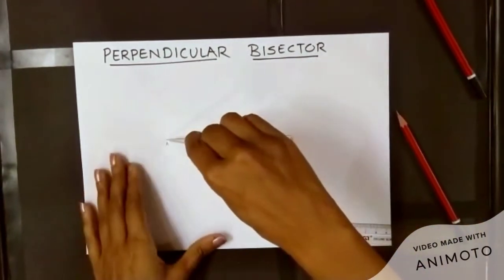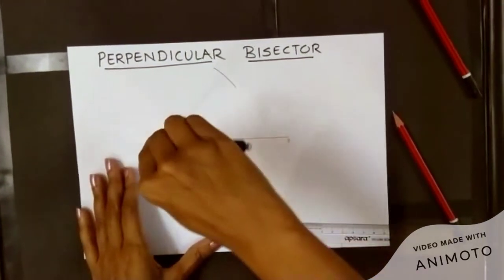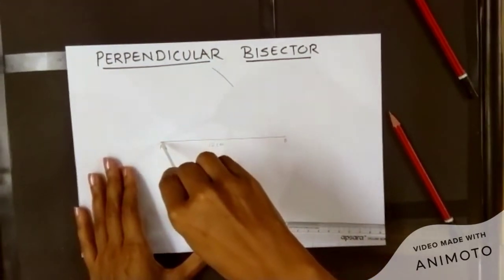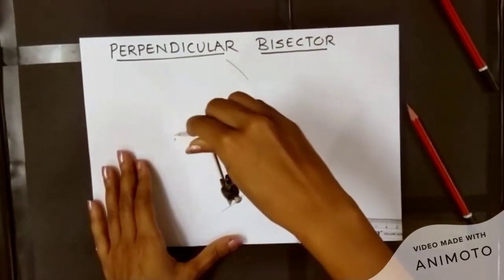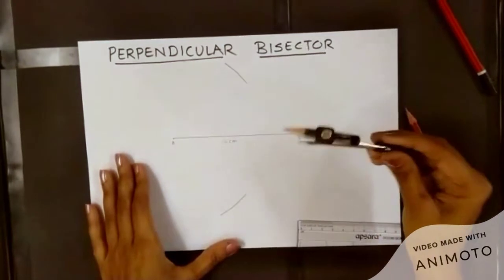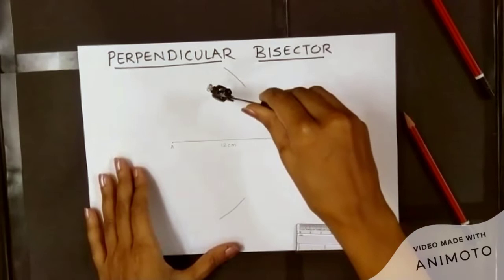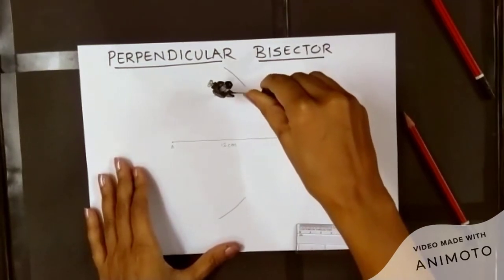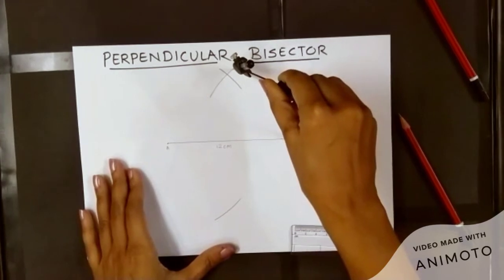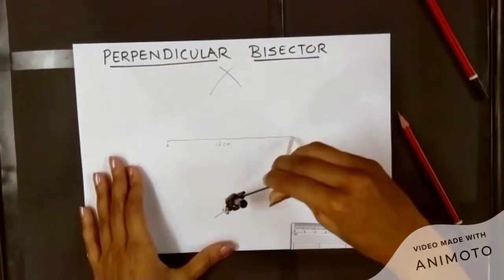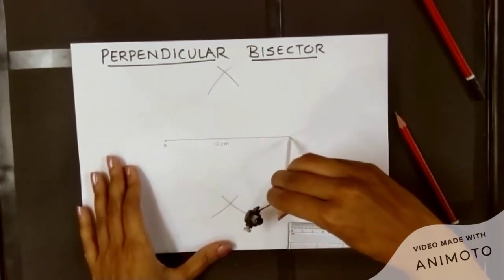Once you have taken this distance, you will make an arc above the line segment, and keeping the distance the same, you will make an arc below the line segment. Without changing this distance, you will keep the pointed side on the other end point of the line segment and make an arc which will intersect your previous arc. Intersect means to cut your previous arc. Follow the same process with the arc drawn below the line segment.